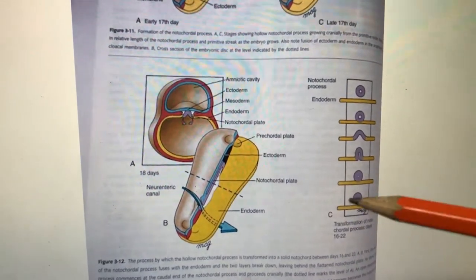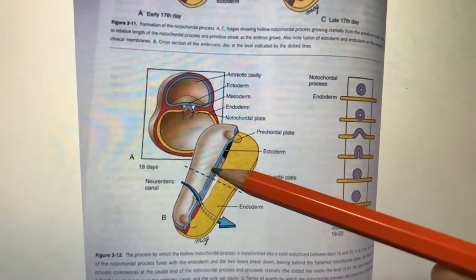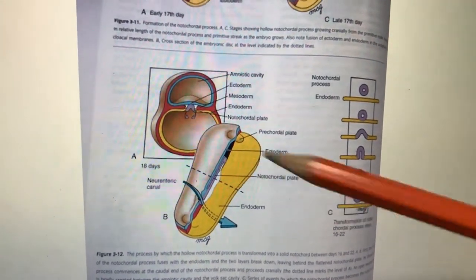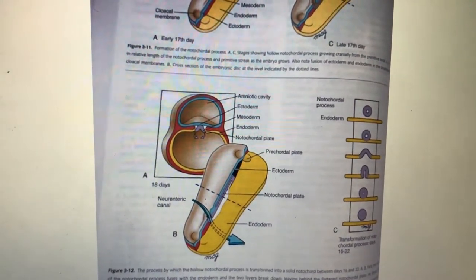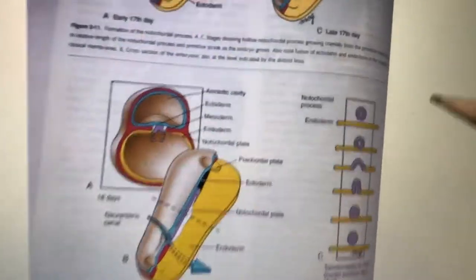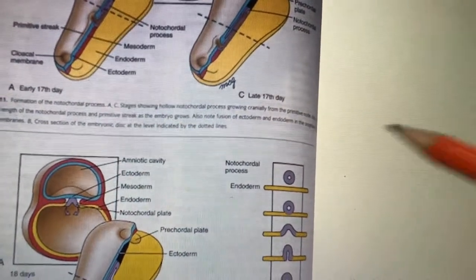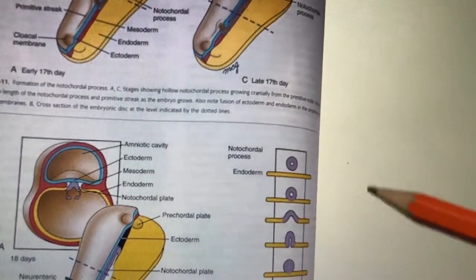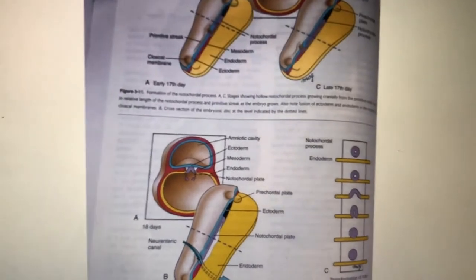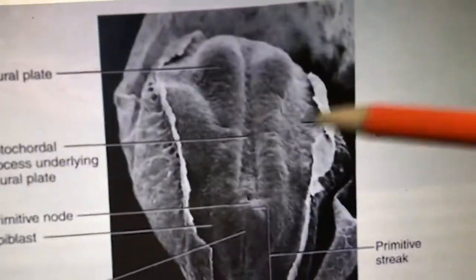The notochord eventually disappears completely. Only the remnant of the notochord can be seen in the nucleus pulposus — this is an MCQ point. The nucleus pulposus is present in the intervertebral disc. The intervertebral disc has an outer fibrous layer called the annulus fibrosus and a center jelly-like substance called the nucleus pulposus, which is the remnant of the notochord.